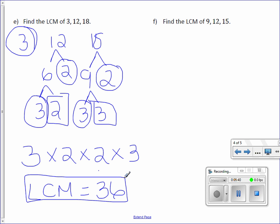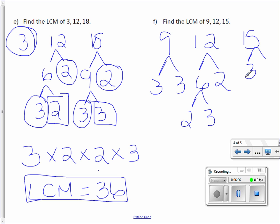Letter F, find the LCM of 9, 12, and 15. 9 is 3 times 3, 12 is 6 times 2, 6 is 2 times 3, 15 is 3 times 5. All 3 trees have a 3 in common.